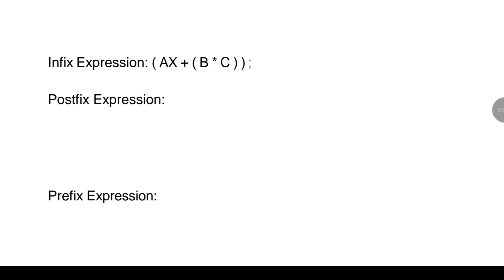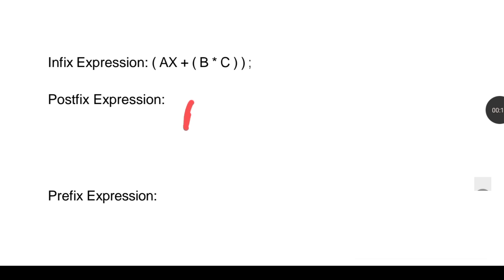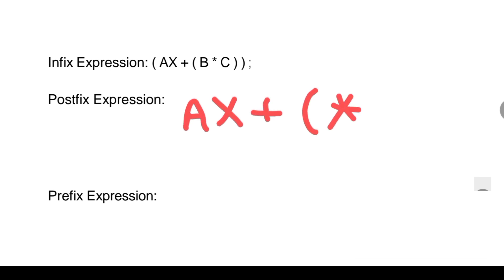So here we have A*X + B*C. For prefix, we will first solve the bracket only, so it becomes A*X + and this will be into B*C. The plus operator will shift to the front.